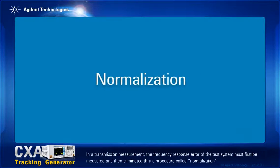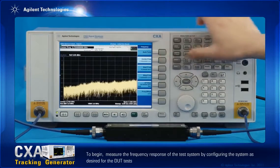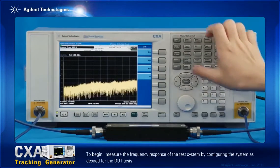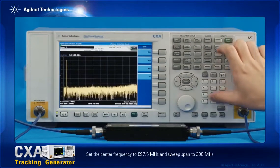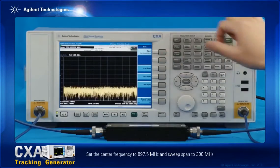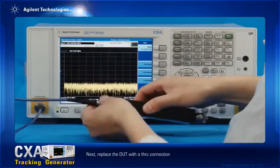In a transmission measurement, the frequency response error of the test system must first be measured and then eliminated through a procedure called normalization. To begin, measure the frequency response of the test system by configuring the system as desired for the DUT tests. Set the center frequency to 897.5 MHz and sweep span to 300 MHz. Next, replace the DUT with a through connection.